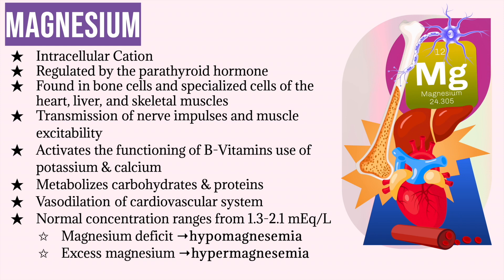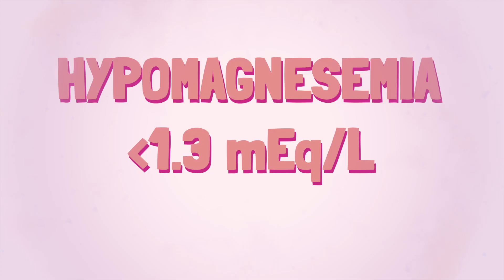A normal magnesium level ranges from 1.3 to 2.1 milliequivalents per liter. When there is a lower than normal serum level of magnesium, this is classified as hypomagnesemia. When there is a higher than normal serum level of magnesium, this is called hypermagnesemia.